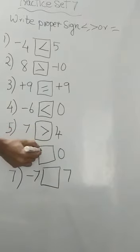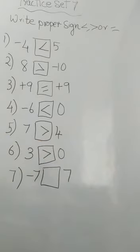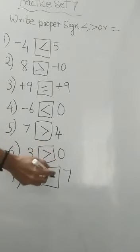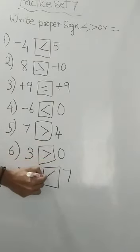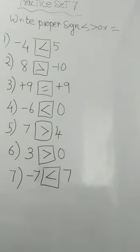Next, 7 and 4. Both are positive, so 7 is greater. 3 and 0. 3 is a positive number, so it will be greater than 0. Next, minus 7 and plus 7. The positive number will be greater. So we did till 7, right?